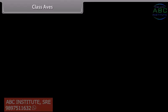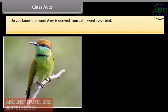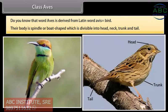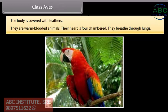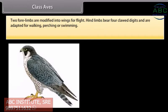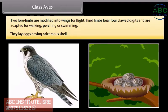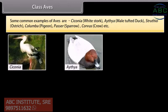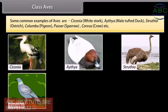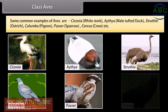Class Aves. The word Aves is derived from Latin word 'avis' meaning bird. Their body is spindle or boat-shaped, divisible into head, neck, trunk and tail. The body is covered with feathers. They are warm-blooded animals. Their heart is four-chambered. They breathe through lungs. Two forelimbs are modified into wings for flight; hind limbs bear four clawed digits and are adapted for walking, perching or swimming. They lay eggs having a calcareous shell. Common examples are Ciconia (white stork), Aythya (tufted duck), Struthio (ostrich), Columba (pigeon), Passer (sparrow) and Corvus (crow).